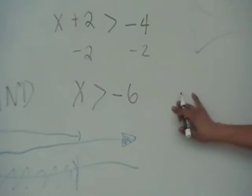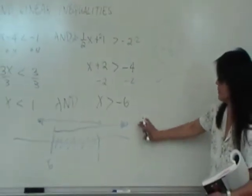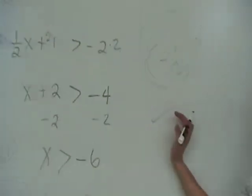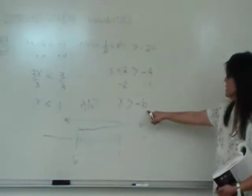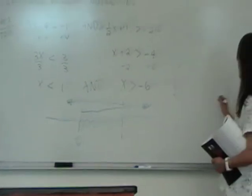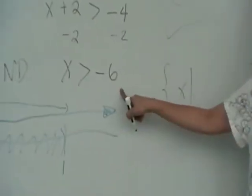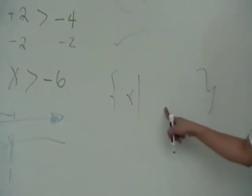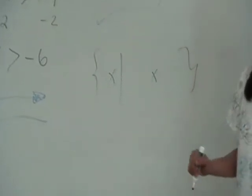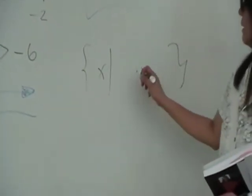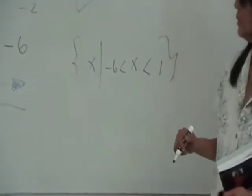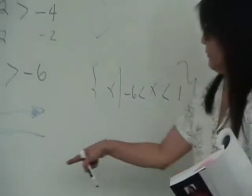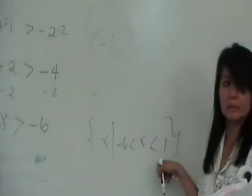The word 'and' means you want both conditions to happen at the same time. The graph shows the overlap. These two things — the graph and the interval notation — are what I require on your test. For set notation, you can put x in the middle with negative 6 on the left and 1 on the right. I really love the graph because it shows me how to write all my other answers.